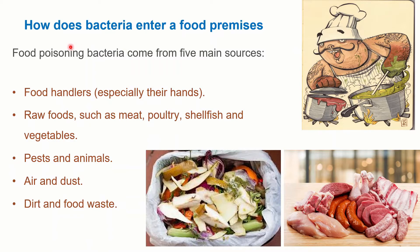Now we look at how bacteria enter food premises or a kitchen. There are five main sources through which bacteria enter. First, food handlers who handle contaminated food. Second, transfer from raw foods such as meat, poultry, shellfish, and vegetables, which are contaminated. Third, pests and animals carrying bacteria can enter food premises. Fourth, air and dust particles can also bring bacteria into food premises.